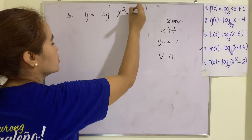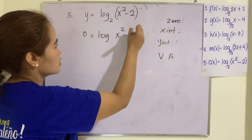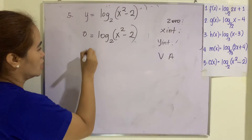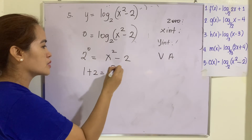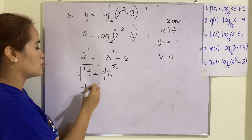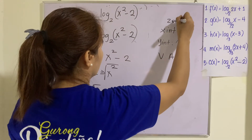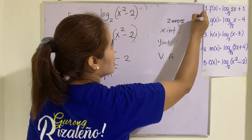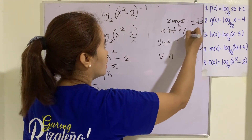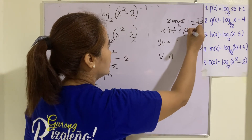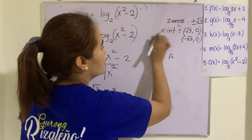Number 5: y equals log of (x² minus 2) to the base 2. Setting y to zero and changing to exponential: 2⁰ equals x² minus 2, so 1 plus 2 equals x², giving x² equals 3. Taking the square root, x equals positive and negative square root of 3. Since √3 is irrational, there are two zeros: positive and negative square root of 3. The x-intercepts are (√3, 0) and (−√3, 0).